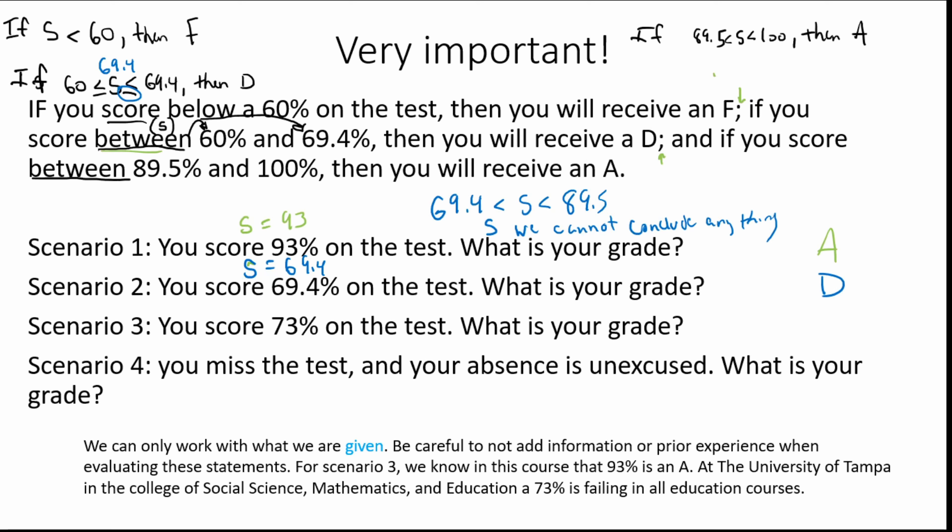Scenario four: you missed the test and your absence is unexcused. What is your grade? Well, we have no conditional statement — no given, no assumption about the school's absence makeup policy. Maybe you are allowed to make up a test; if your absence is unexcused, it may be at the teacher's discretion. Nothing is said at all about any part of missing the test, whether excused or unexcused. So we really have nothing to say here at all. It says: we can only work with what we are given. That is our hypothesis.